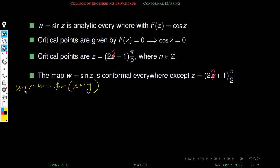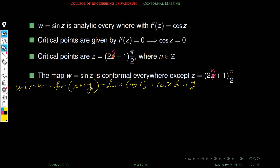Let w equal to u plus i·v. So we have to find the real and imaginary parts of w, that means u and v. Our sin z becomes sin of (x + iy). We can expand sin(x + iy) using the formula sin(a + b), which becomes sin x·cos(iy) plus cos x·sin(iy).